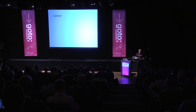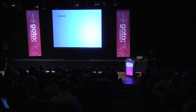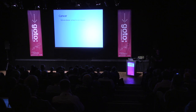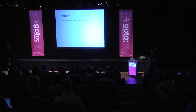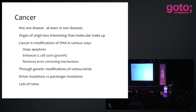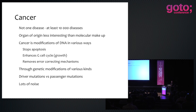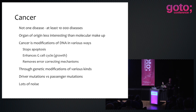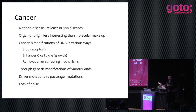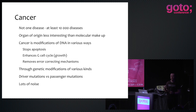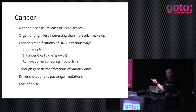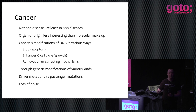That brings us to cancer. Cancer is not a disease — it's really a class of diseases. It's 10,000 different diseases. Because cancer is really a broad classification of something that can go wrong to cause your cells to multiply without control. And there are many ways this can go wrong — in fact, there are tens of thousands of ways the genomic machinery can go wrong to make this happen.